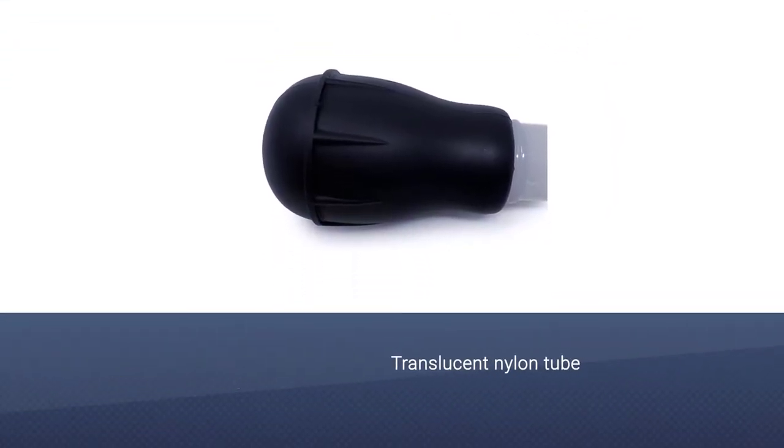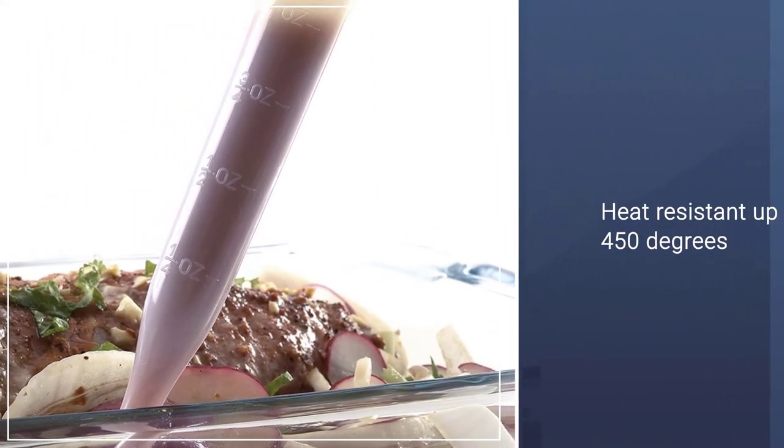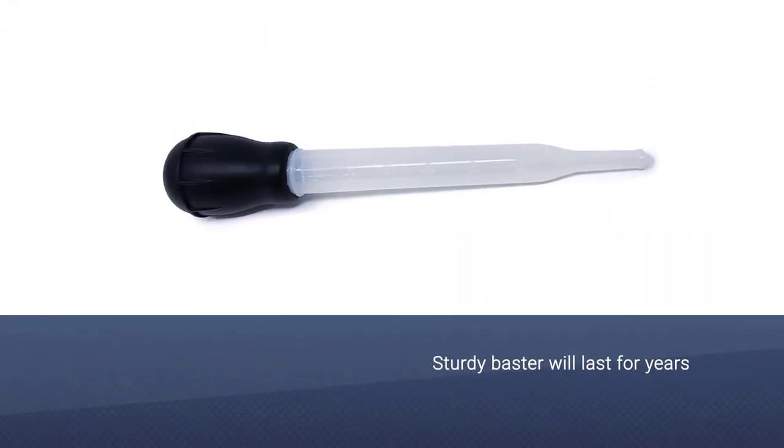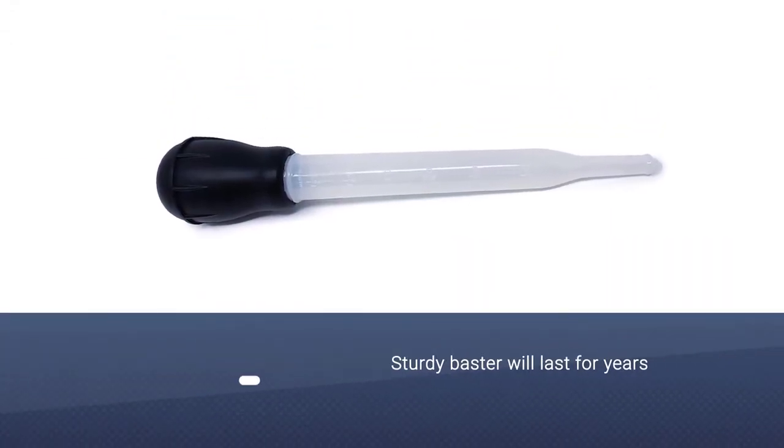With the translucent nylon tube and squishy bulb, it's heat resistant up to 450 degrees, so you don't need to worry about it melting or deforming as you baste your turkey or roast with hot drippings. This sturdy baster will last for years.